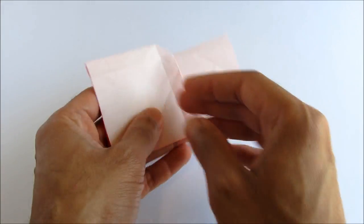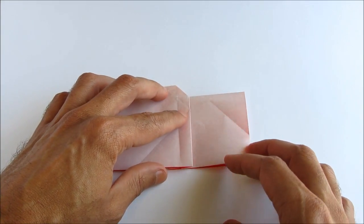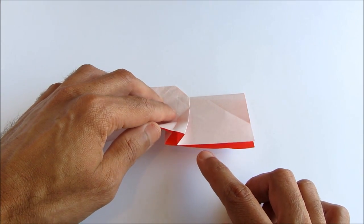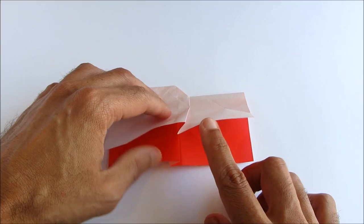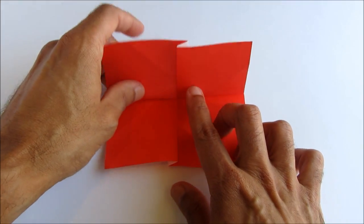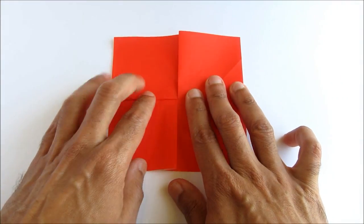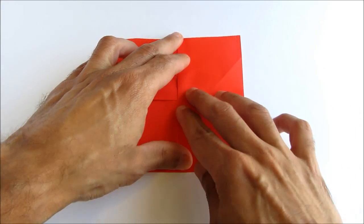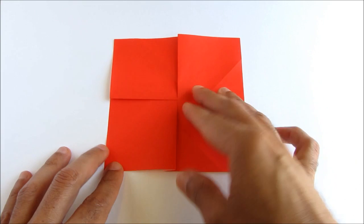Then flip the paper over. We're going to unfold the top layer so that we now have a square. So we're back to having a square after all that work.